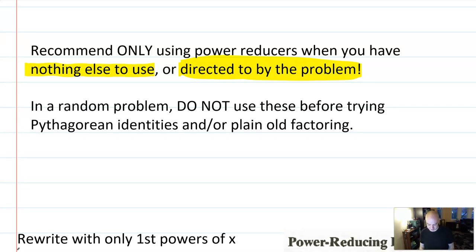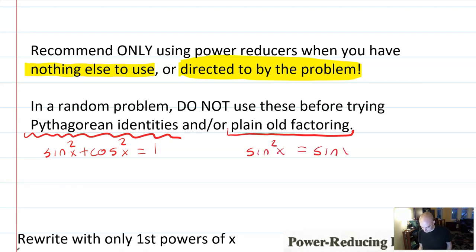Some things you should try before attempting to power reduce. Good old Pythagorean identities. Sine squared plus cosine squared x equals one. That's almost always a better substitution or plain old factoring. Maybe you have a sine squared x. Maybe the solution is just write it as sine x sine x along with whatever else is going on in the problem. Almost never do you want to use those power reducers. But if you do, or if the problem tells you to, here's how you do it.